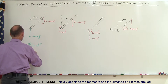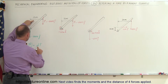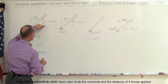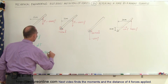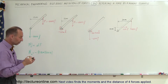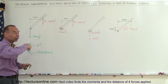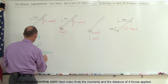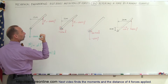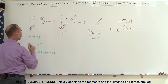The moment can therefore be written as negative d, which is 18 centimeters or 0.18 meters, multiplied by the magnitude of the force, which is 600 newtons. Note that the direction of the moment is clockwise, which is negative. The z direction out of the board is positive z; into the board is negative z. To the right is x and up is y.